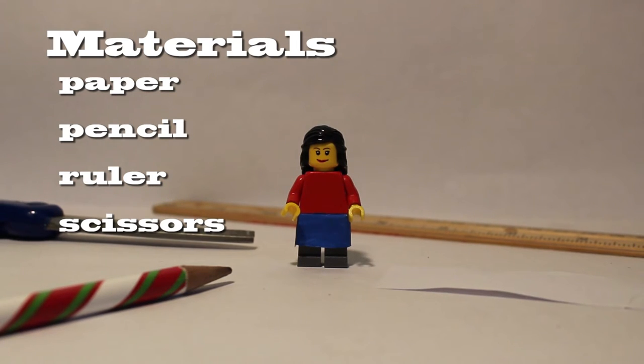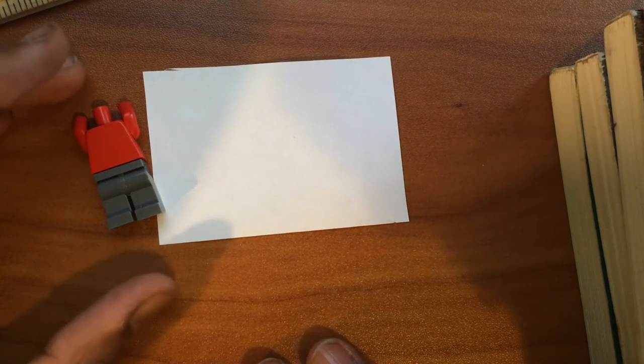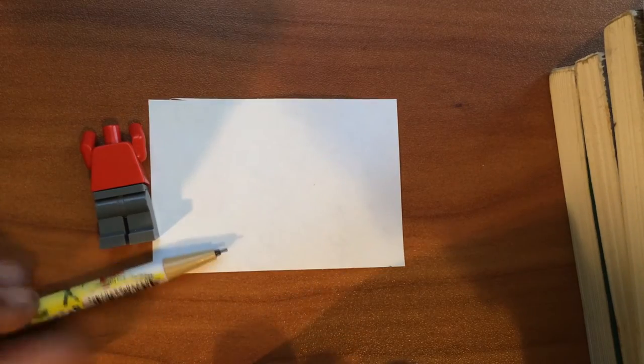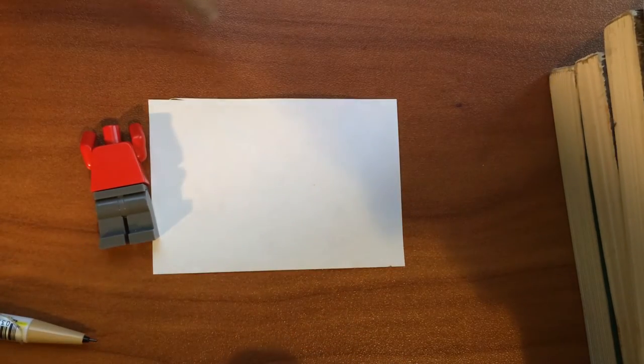And the rest is optional, like paints and markers, stuff like that. Whatever you want to do to this skirt piece that you make in this tutorial. Alright, so say we want to make a skirt. So now we have our paper, we have a ruler, pencil, and we also have some scissors.